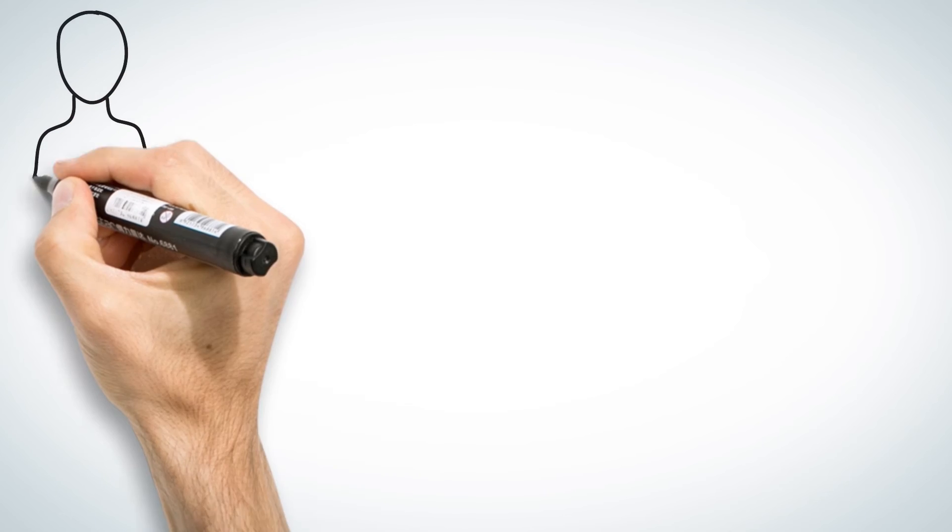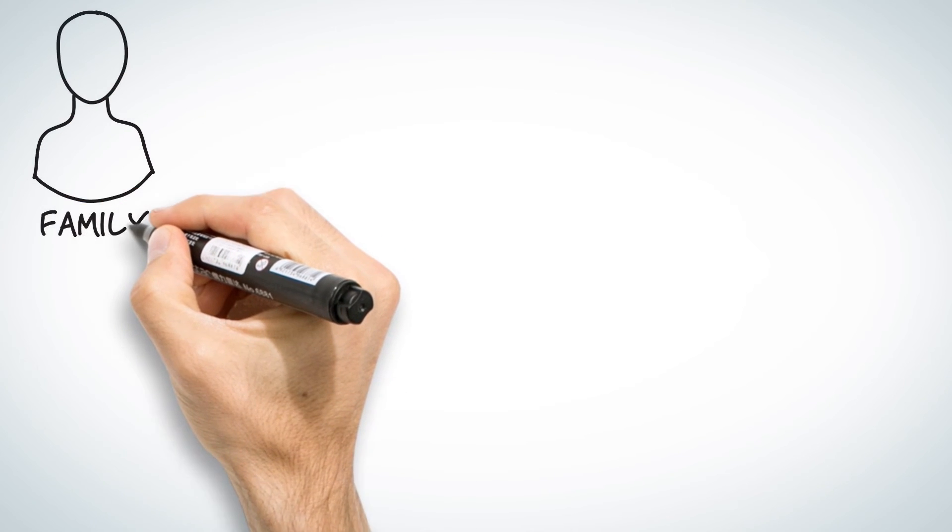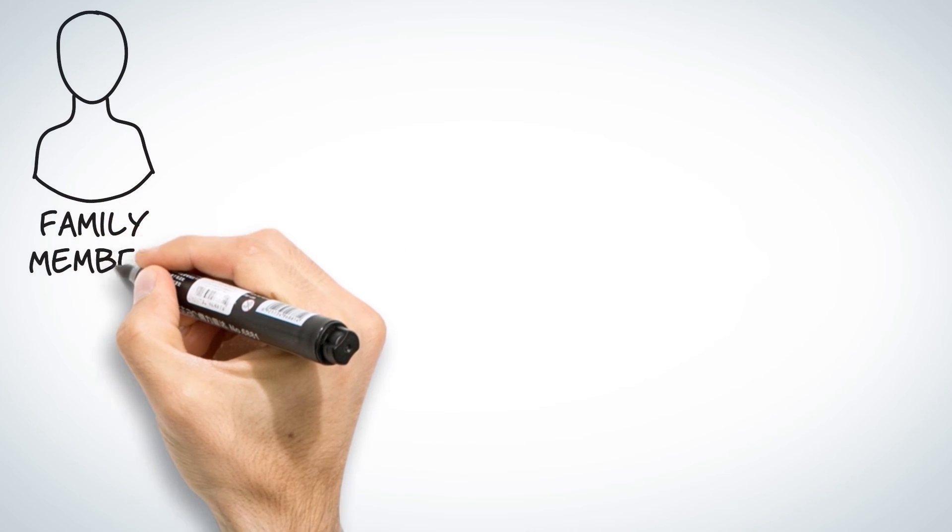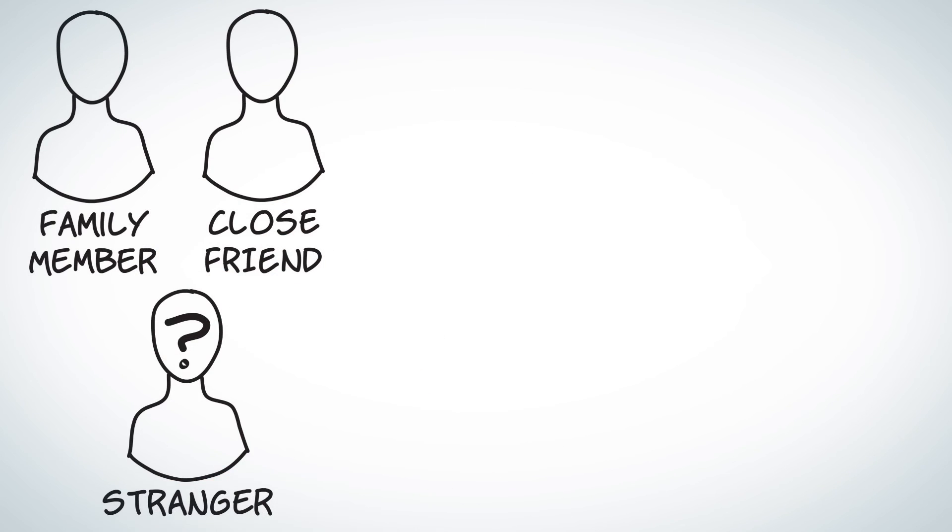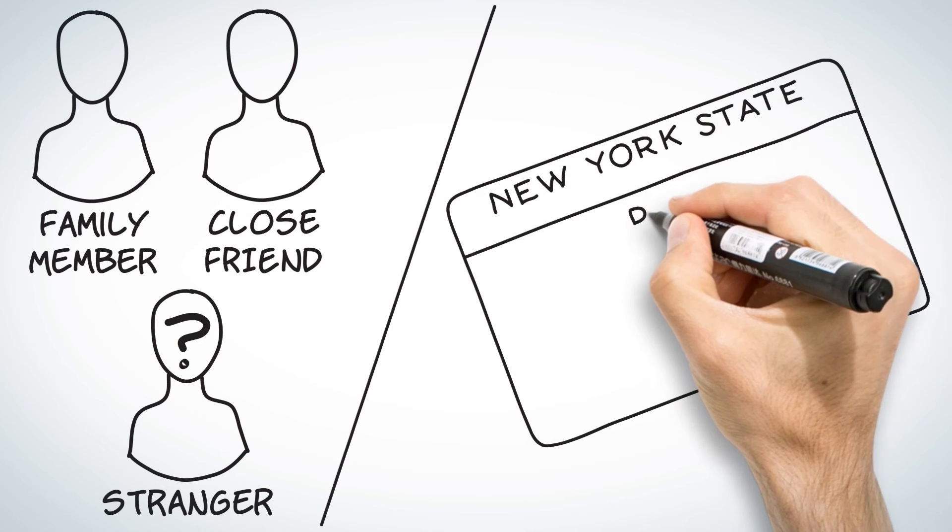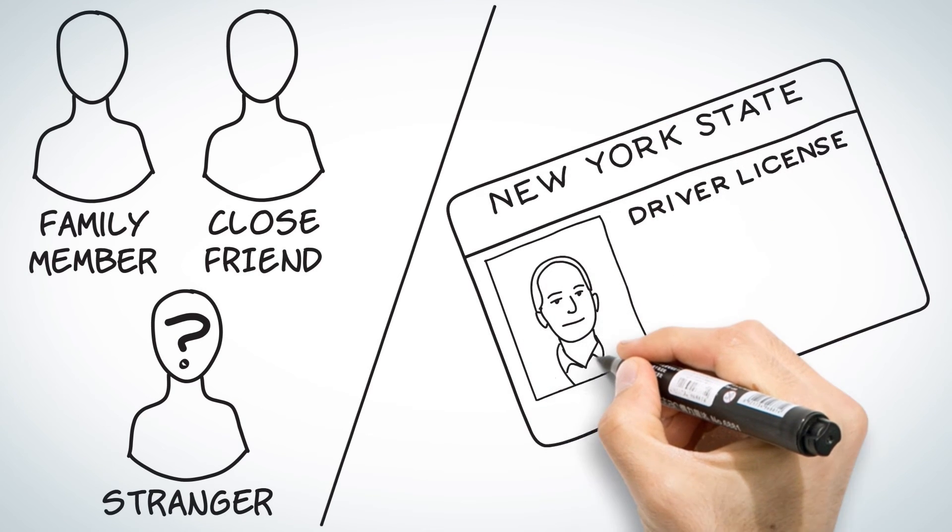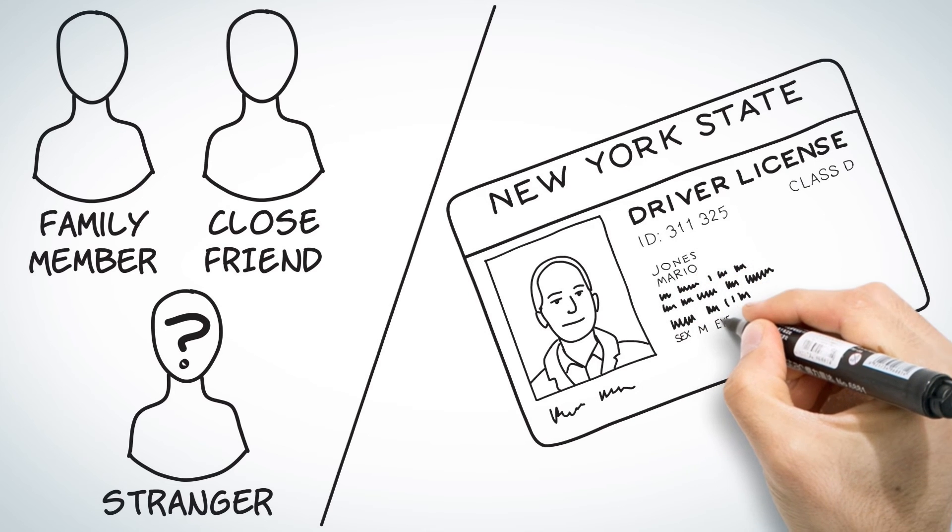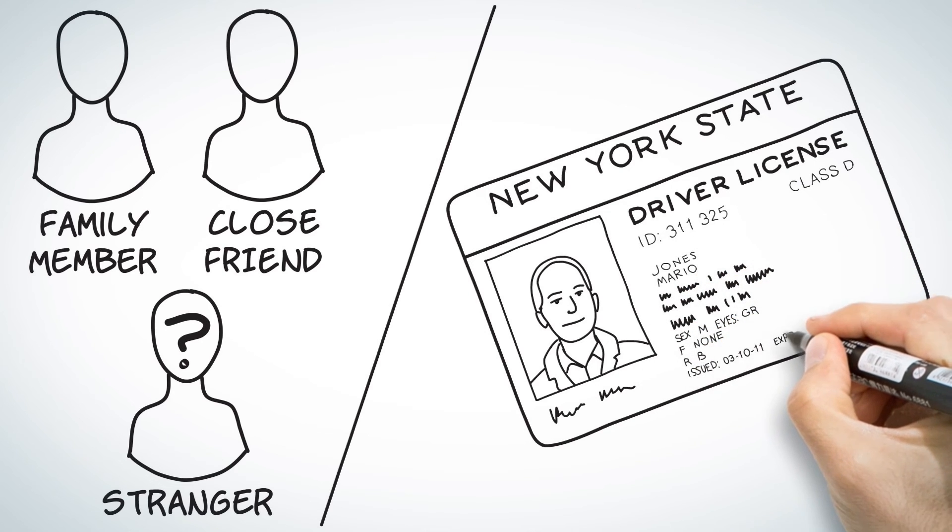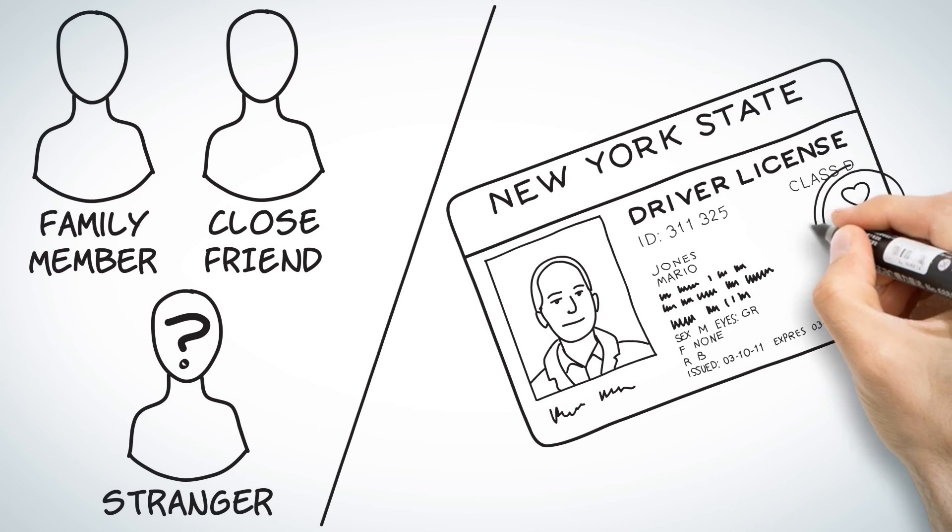Donated kidneys can come from two sources. The first type is from a living donor such as a family member, a close friend, or even a stranger. These donors give you a kidney as a true altruistic act of kindness. The second type of kidney comes from a deceased donor. These kidneys come from people that have passed and have consented to donate his or her organs upon death.